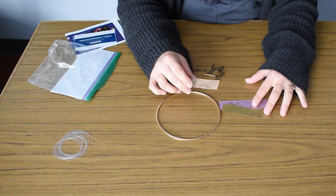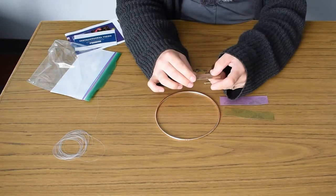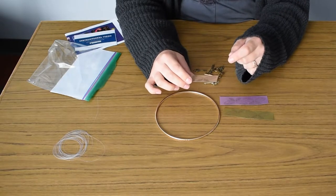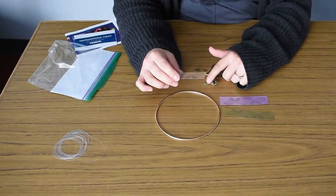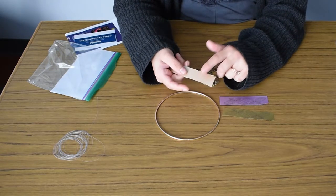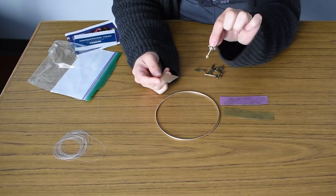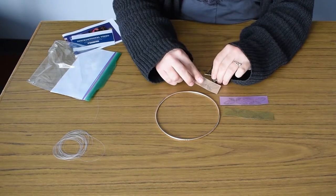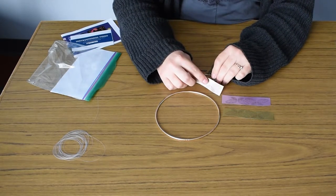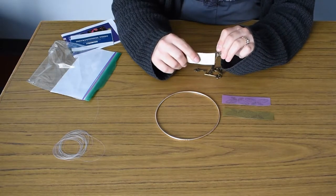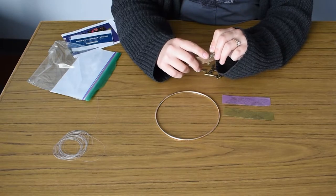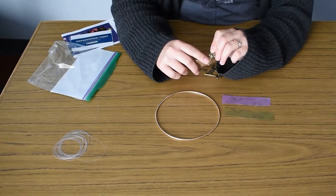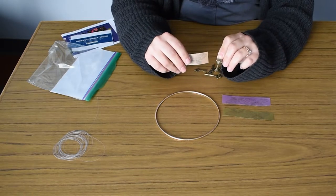So once you've cut your wings out, you are going to take your glue and dab it on either the back of your wings or onto a key. And then you are going to stick your wings on this part of the key, not the decorative part. You want this longer piece right here.